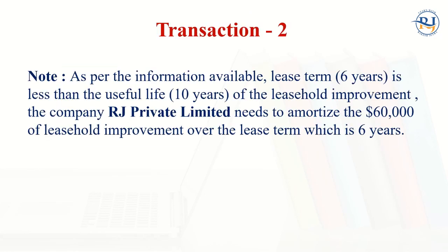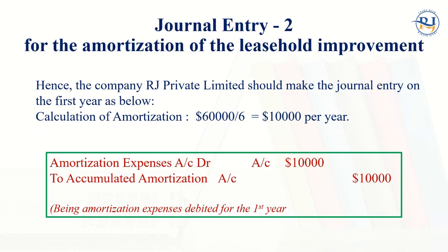Transaction number two: as per the information available, the lease term is six years, which is less than the useful life of the asset at ten years. The company needs to amortize the sixty thousand dollars of leasehold improvement over the lease term of six years. In this case, we are not going to take ten years but six years only, because we use the lease term or the useful life of the leasehold improvement, whichever is less. Since six is less than ten, we use six years.